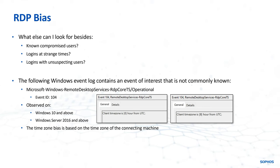Suddenly you start seeing client time zone biases of eight or six or various other values that differ from the norm for those users — that could help you hone in on potentially suspicious RDP connections. Let's take an example where a user's credentials have been phished, the attacker has logged into the VPN because you don't have MFA enabled, and they start accessing devices using RDP. You would then start to see the time zone of that attacker machine.